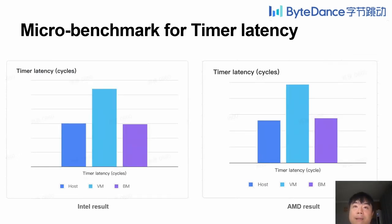Here is the timer latency result based on our microbenchmark. The benchmark measures the latency from setting an immediate expired deadline to the arrival of the timer interrupt. The left one is for Intel. The timer latency in the VM is equal to that in native host. The result in a standard VM, however, is much worse. The right figure is for AMD, and the result on AMD is similar.